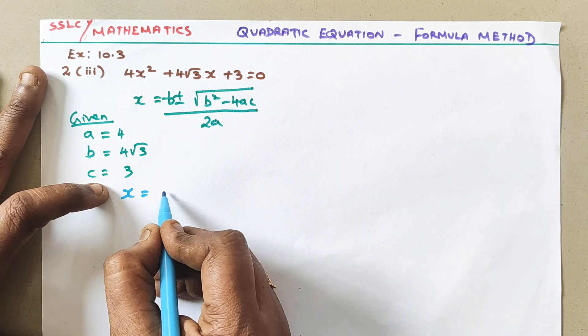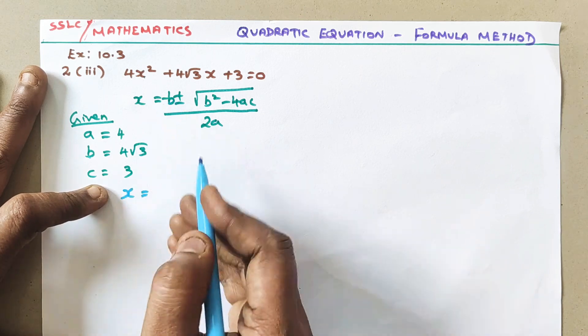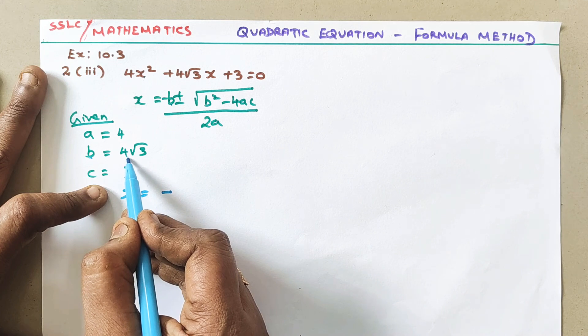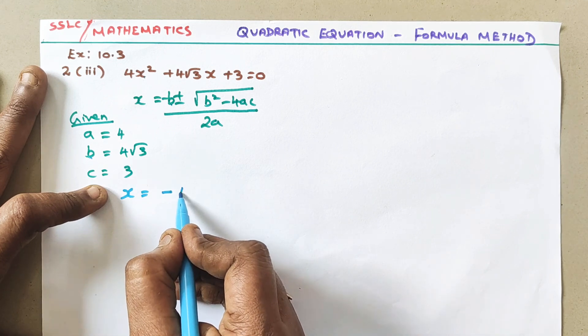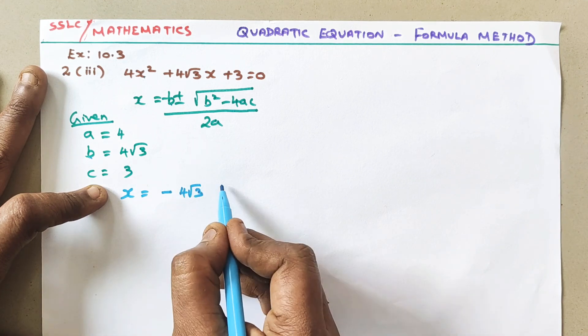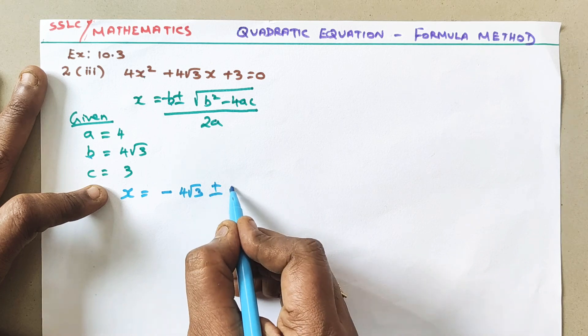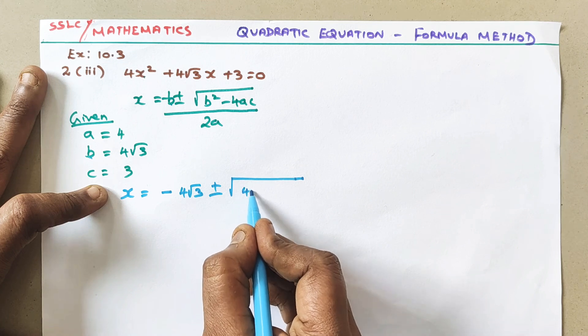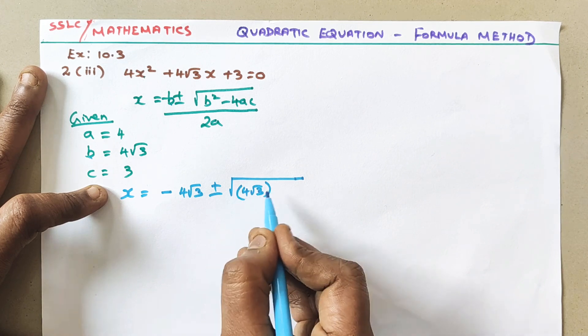So the x value, x equals minus b. So first a minus sign. What is the b value? b value is 4√3. Next, plus or minus square root of b². b² means here (4√3)².